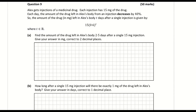Question nine: Alex gets injections of a medical drug. Each injection is 15 milligrams. Each day, the amount of drug left in Alex's body decreases by 40 percent. The amount of drug left in Alex's body t days after a single injection is given by a function. The injection contains 15 milligrams, and decreases by 40%, so that's why it's 0.6 — because it's 1 minus 0.4.